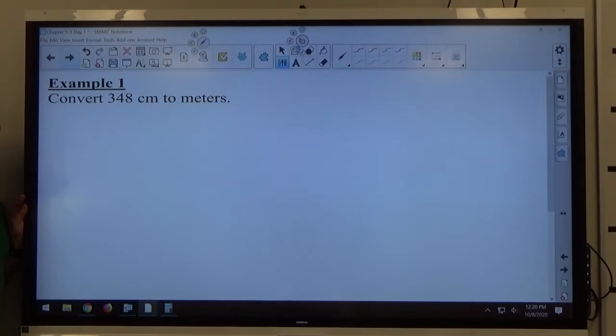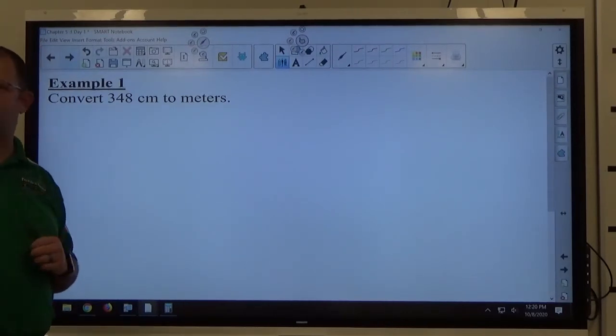The main idea is if you go from a small unit to a big unit, you move the decimal left. If you go big to small, you move it right, but then you have to remember all that. So if we instead go with the plan that we've been using for section 5.2,